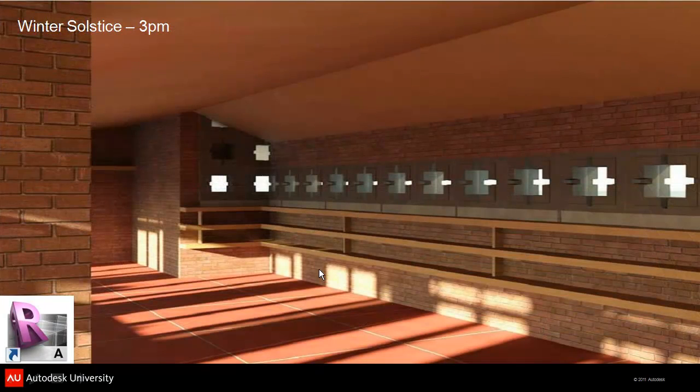If I look at that north wall, I can set a time for my shadow — say winter solstice, 1950, 3pm in the afternoon — and I can see how much sunlight would penetrate into the room itself.